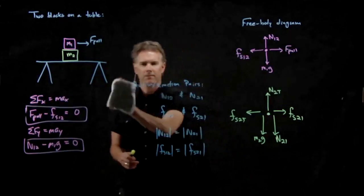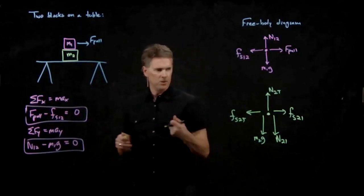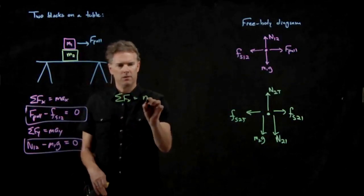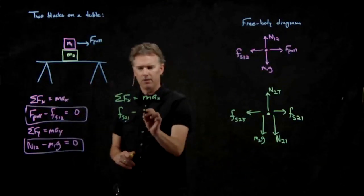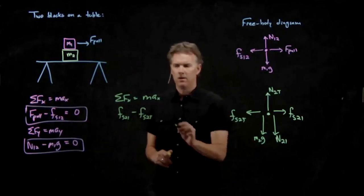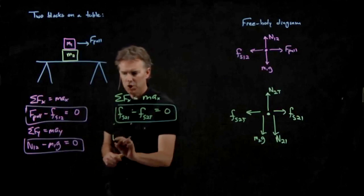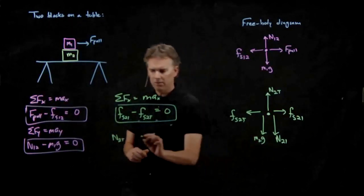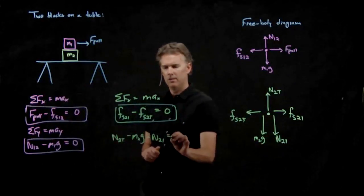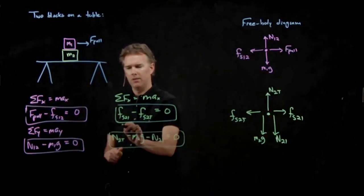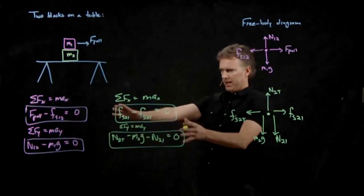What about for the second one? For the second one, we have sum of the forces in the x direction. What do we have? We have Fs-2-1 minus Fs-2-T. That equals zero. And then we have the vertical forces. N-2-T minus M-2-G minus N-2-1. All that equals zero. And this was, of course, the vertical equation. That's writing down Newton's second law.